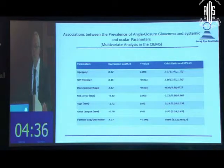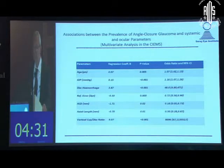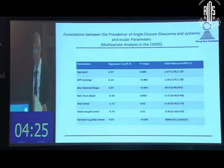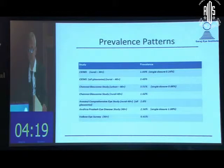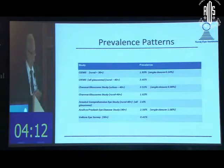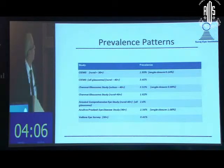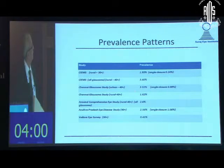In multivariate analysis, angle closure and open angle glaucoma were associated with age, intraocular pressure, disc hemorrhage, refractive error, anterior chamber depth, axial length, and vertical cup-disc ratio. Looking at prevalence patterns across India, there are regional differences — for example, in the Chennai Glaucoma Study the urban population aged 40 plus had a prevalence of 3.51 percent, but the rural group had 1.62 percent, while in rural central India it was 3.45 percent, closer to the Chennai urban figure.